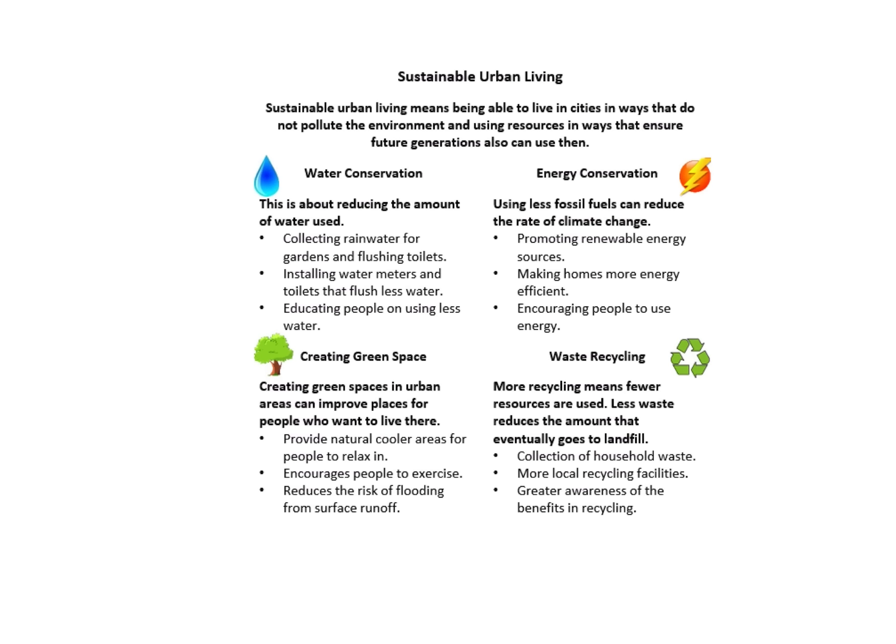Thinking about sustainability — something being sustainable means you can do it again in a year, three years, five years' time. There are four main ways to generate sustainable urban living: water conservation (collecting rainwater, educating people on saving water); energy conservation (reducing fossil fuels, using renewable energy sources); waste recycling (generating awareness of recycling benefits); and creating green space, also known as urban greening — promoting green areas within towns and cities.